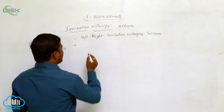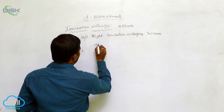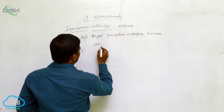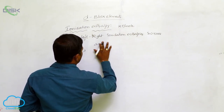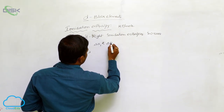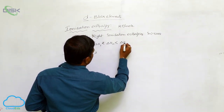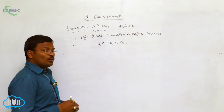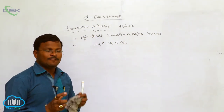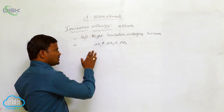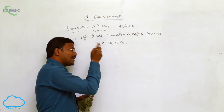The ionization enthalpy values follow the order: ΔH1 is less than ΔH2, which is less than ΔH3. This means to eliminate the first electron from a neutral atom we use less energy than to eliminate the second electron from the same atom.